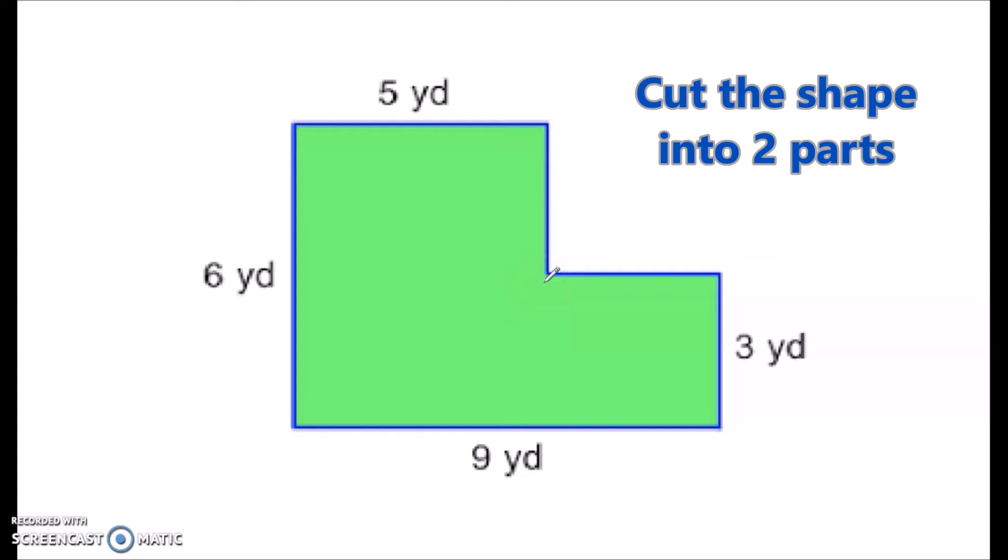What you want to do is just split this shape up into two different shapes. So what I'm going to do here is just draw a line straight down like that. So what I've done is I've just now created two different rectangles here. And I'm going to have to figure out this missing side still to be able to figure out the area. But it's going to be super easy. So watch this.